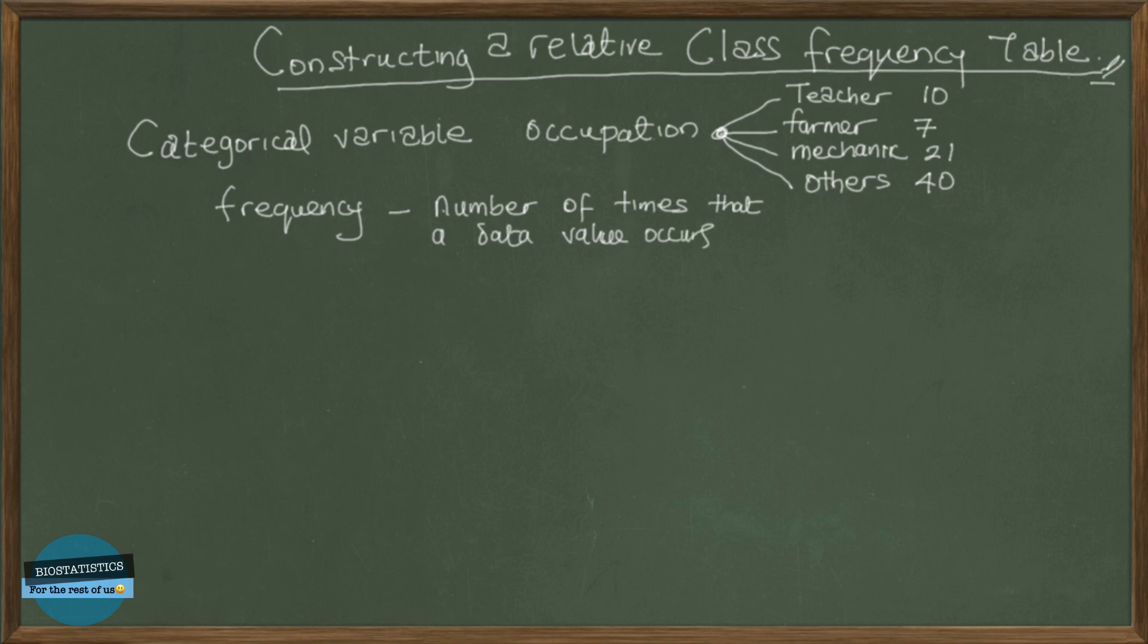So the frequency of teacher is 10, the frequency of farmer is 7, there are 7 farmers. How many mechanics do we have? 21. And then how many others? 40. So that's the frequency.